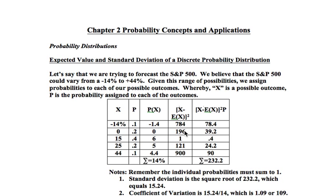We do that likewise with each one — 0 minus 14 squared is 196, all the way down the line. Then what we have to do in the last column is take the squared differences — like in the first case 784 — and simply multiply it by 10%.